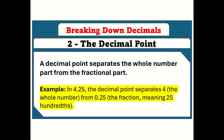Breaking down decimals — the decimal point. A decimal point separates the whole number part from the fractional part. For example, in 4.25, the decimal point separates 4, the whole number, from 0.25, the fraction, meaning 25 hundredths.